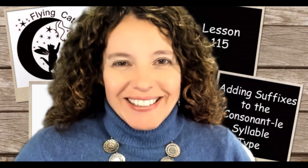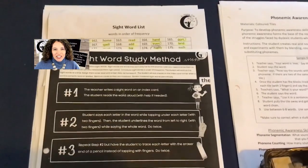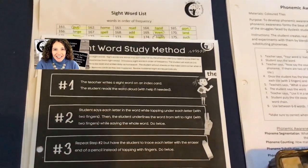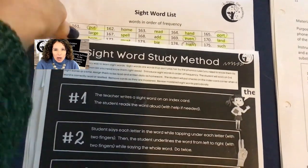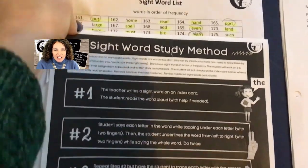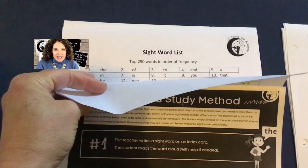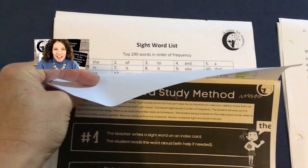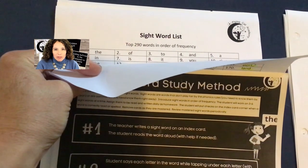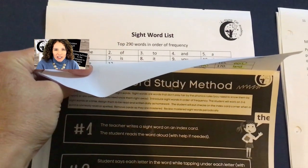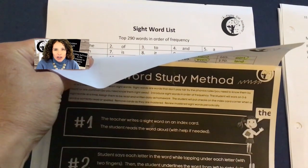Let's begin by setting up the table. You'll need your top 160 sight word list, and if you finish that list you can move on to the top 290 word list, which you can find on the flyingcatacademy.com website. Go to the guided lessons page and you'll see some sub-pages in that section — you want the one called extra resources.